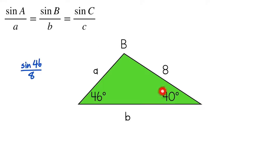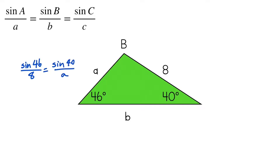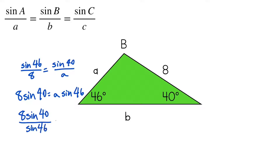Since I know this 40 degree angle, I'm going to use it to solve for A. So sine of 46 over 8 is equal to sine of 40 over A. Now I'm going to cross multiply and solve for A like normal algebra. When I cross multiply, I get 8 times sine 40 equals A times sine 46. Dividing both sides by sine 46, I get A is approximately 7.15.